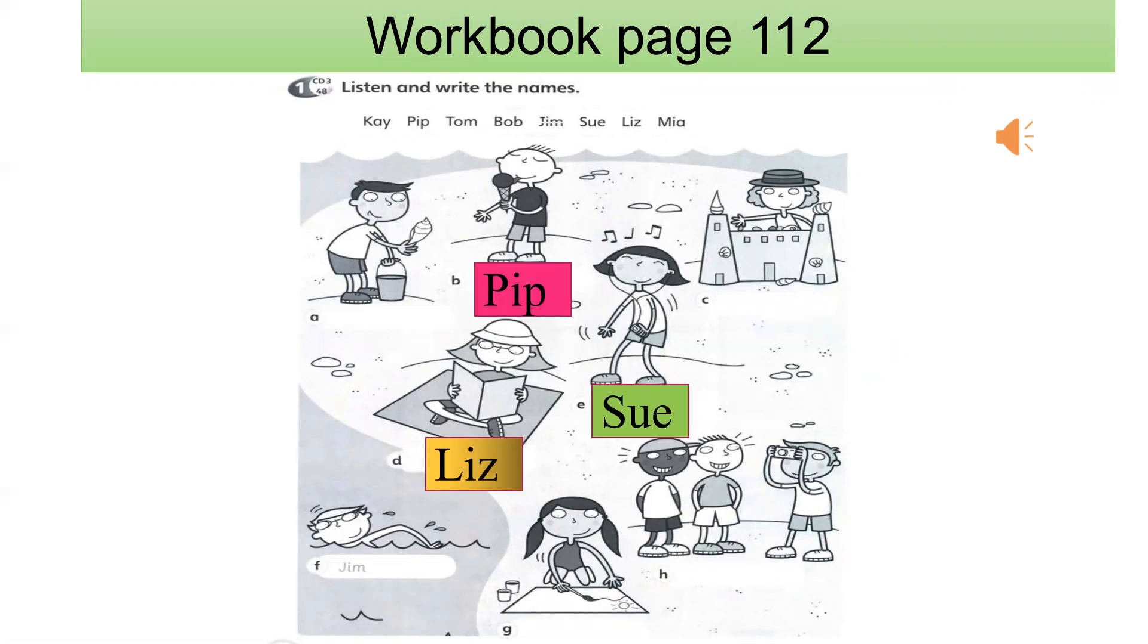There's Bob. He's taking a photo of his friends. Smile everyone. Mia's making a sandcastle. It's really big. There are lots of shells on it.